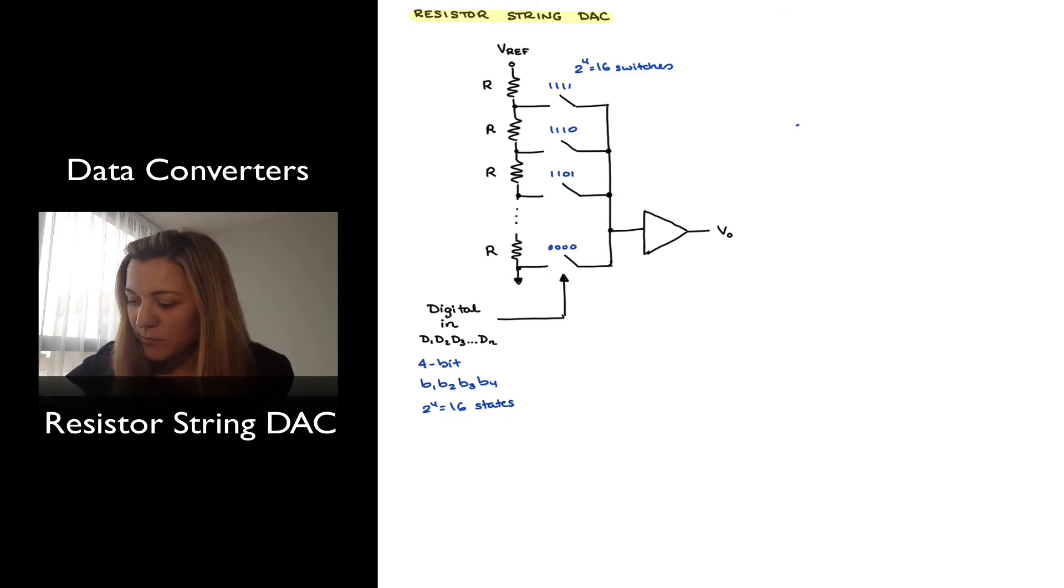As we have seen, is equal to my full scale voltage, which is my reference voltage, minus 1 LSB. Or in other words, my Vout max is equal to VREF times (1 minus 1 divided by 2 to the N), which in this case will be 2 to the 4.